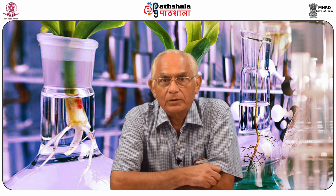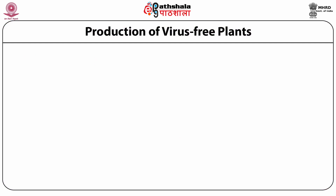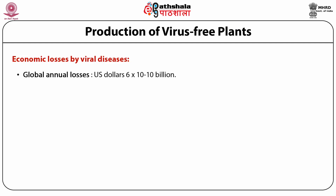Plants infected with fungal and bacterial elements can be rescued from diseases by the application of antibiotics or fungicides, but there is no effective method to control viral diseases. Although some virucidal compounds have been identified and tried, this doesn't seem to be a very practical solution. There are tremendous economic losses by viral diseases — on a global basis, the annual losses of crops by viruses are about 10 billion dollars.